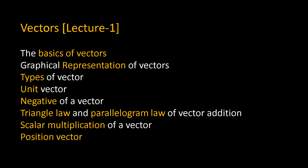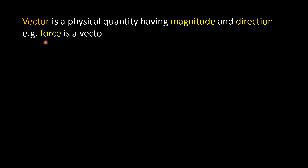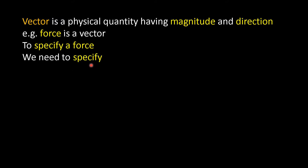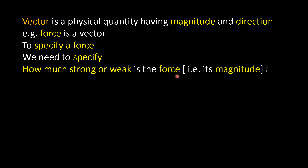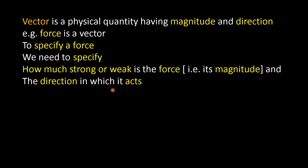A vector is a physical quantity having magnitude and direction. For example, force is a vector. To specify a force, we need to specify how strong or weak the force is — that is, we need to specify its magnitude and the direction in which it acts.